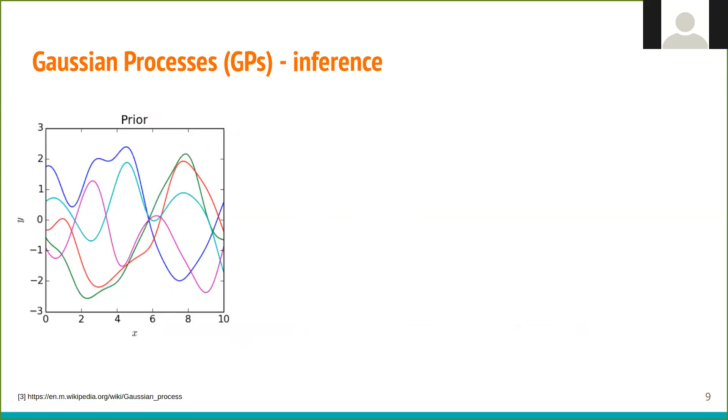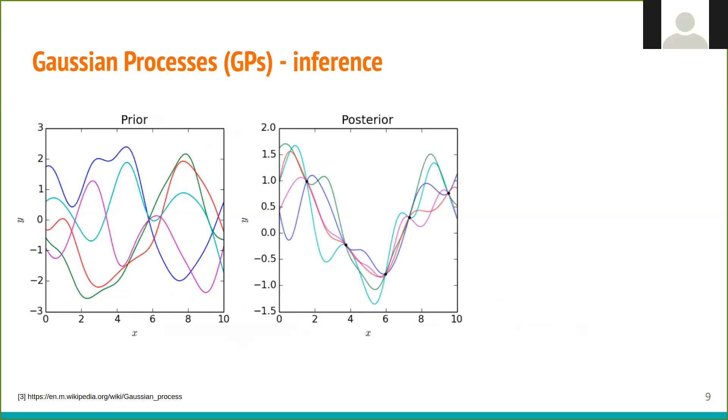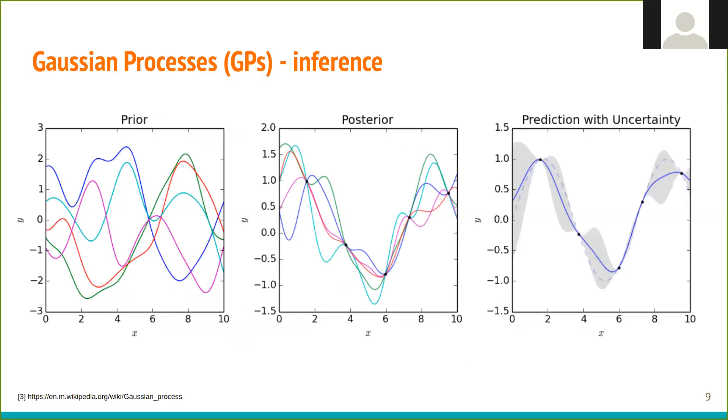We can also do predictions using Gaussian processes. By observing some data points, we narrow down the range of plausible functions and can obtain mean prediction and uncertainty around it.